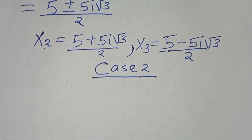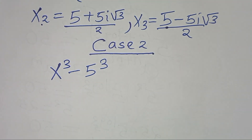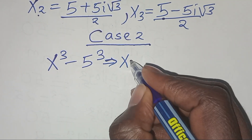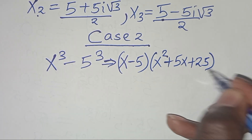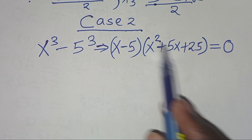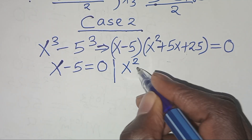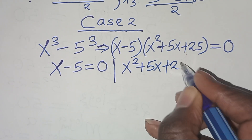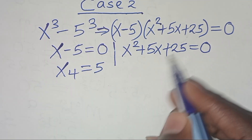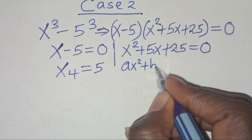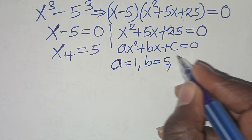Now let's solve Case 2. We have x³ minus 5³ equal to (x minus 5)(x squared plus 5x plus 25) equals 0. This gives x4 equals 5. The second part is the quadratic x squared plus 5x plus 25 equals 0, where a equals 1, b equals 5, and c equals 25.